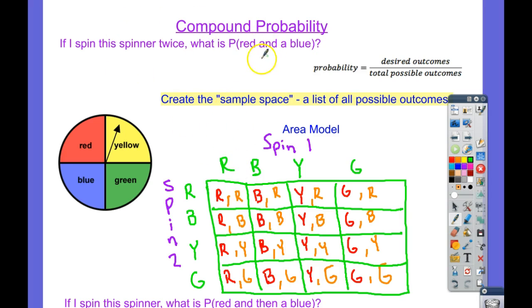So here, when it says, what's the probability of a red and a blue? Well we'd have to put desired outcomes over total possible outcomes. What's our desired outcome? Red and a blue. Let's search for a red and a blue.